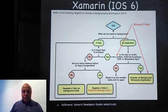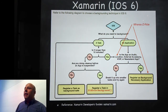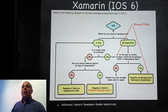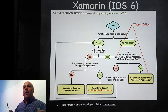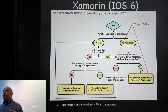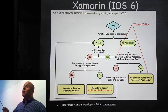Xamarin is a corporation — one of the people who started it is Miguel de Icaza. Miguel de Icaza started the Mono project, which allowed Linux and Unix developers to use the Microsoft .NET framework on Unix and Linux. He is very famous — he is one of the creators of GNOME in the Linux world.